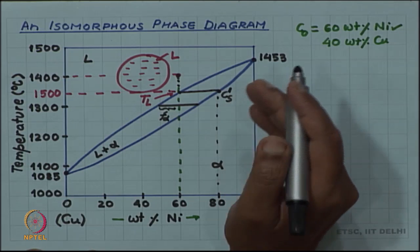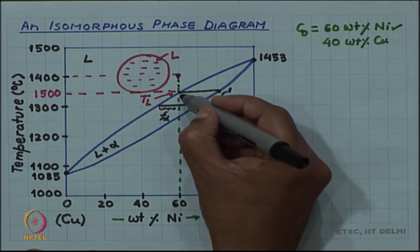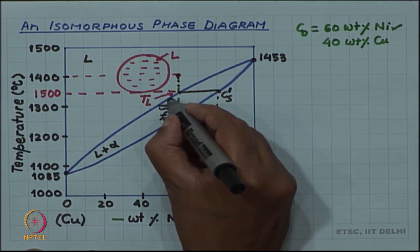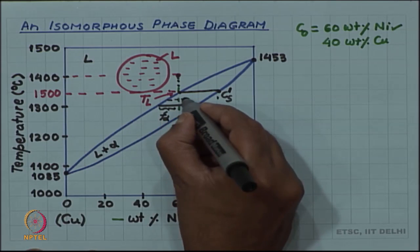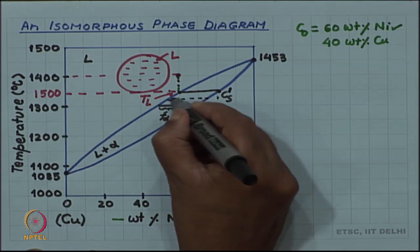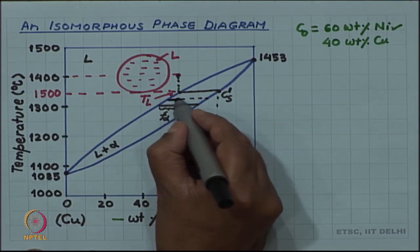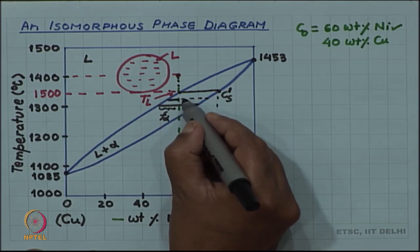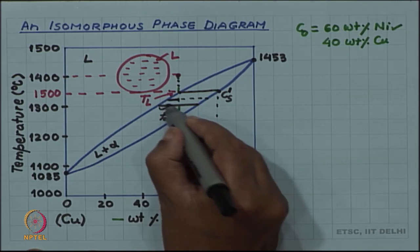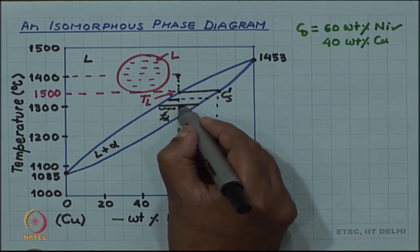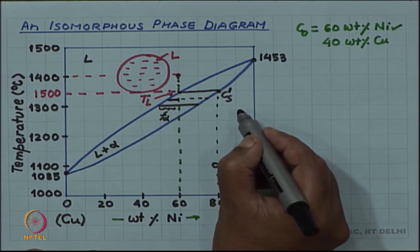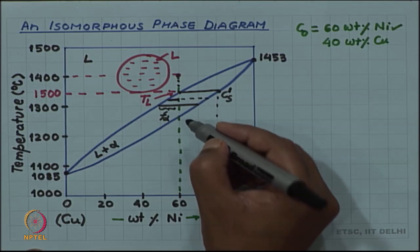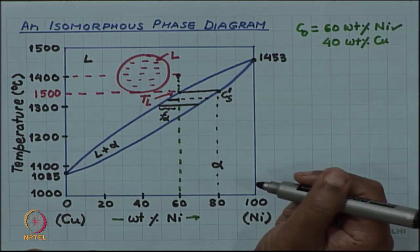The first solid just begins to form when you lower the temperature slightly below T-L, giving a small lever arm. At an intermediate temperature you can see that the F-alpha arm divided by the total arm is a smaller fraction. As you lower the temperature further, you get a higher fraction of solid. This is how solidification progresses — as you lower the temperature, you get more and more solid.